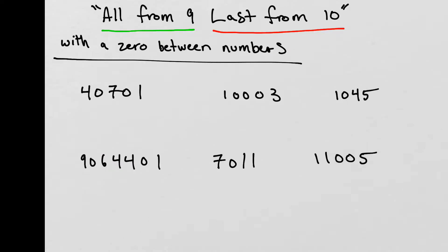There are a couple of special cases when using the formula 'all from 9, last from 10.' The first case is when there is a zero in between the numbers. When there's a zero between digits, we simply treat it like any other number and subtract it from 9. So 9 minus 0 gives us 9. We subtract all digits from 9, and the very last digit from 10, just as before.